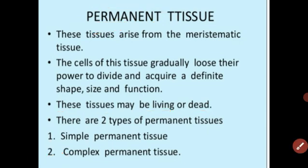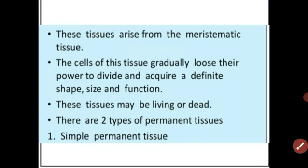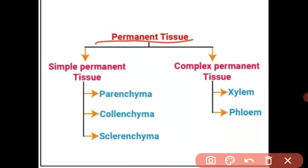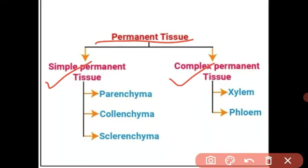Let us see the tree diagram of permanent tissue. Permanent tissue has two types: simple permanent tissue and complex permanent tissue. Simple permanent tissue also has three subtypes: parenchyma, colenchyma, and sclerenchyma.